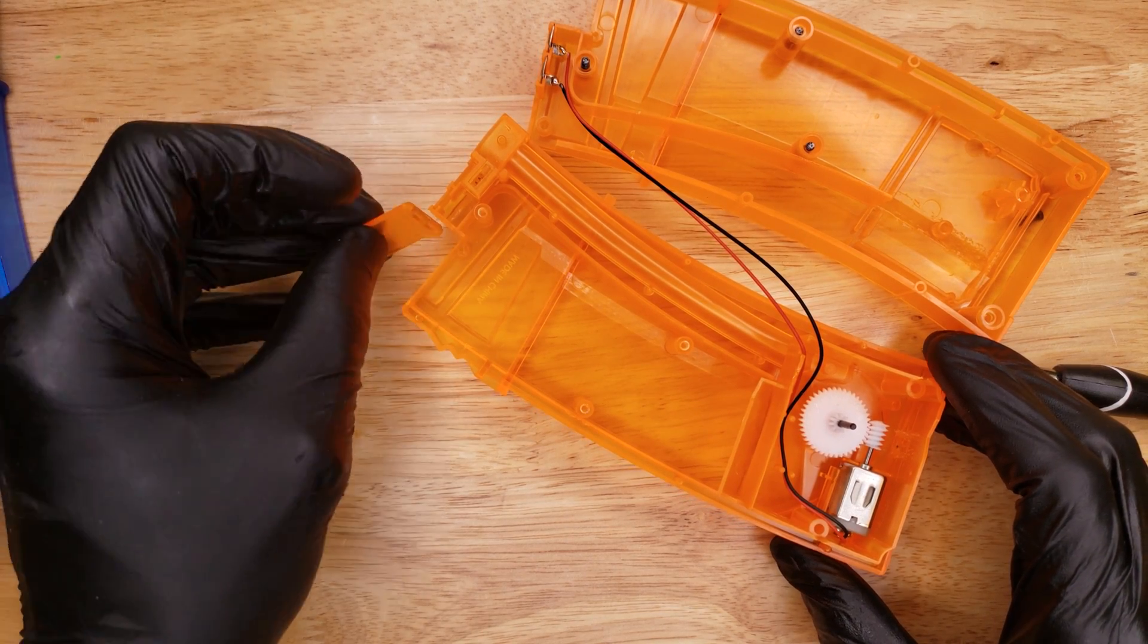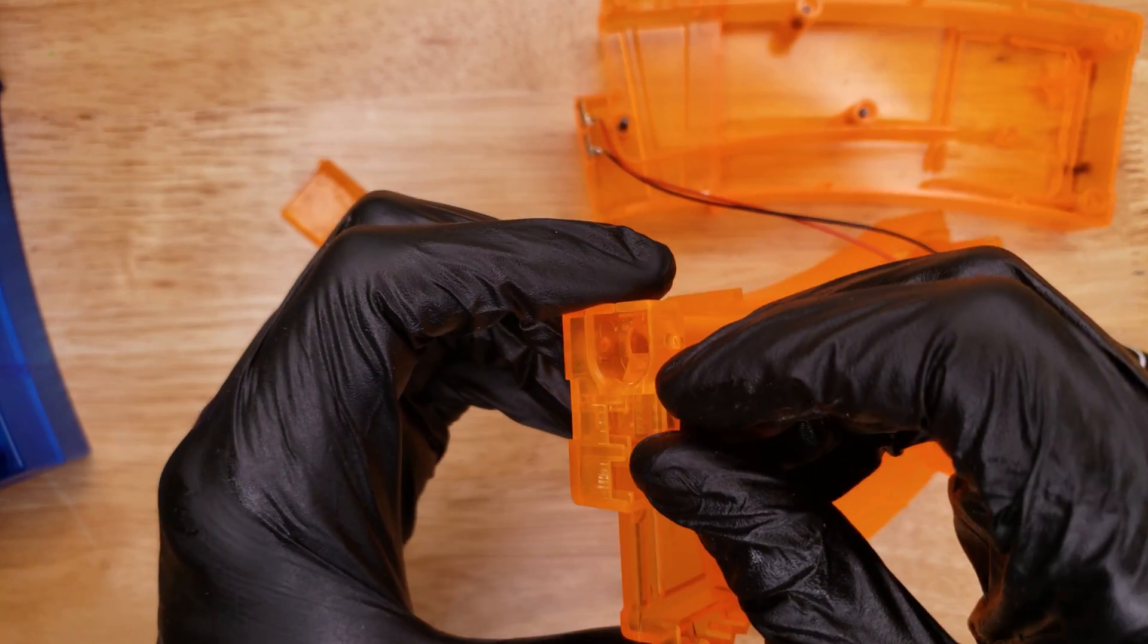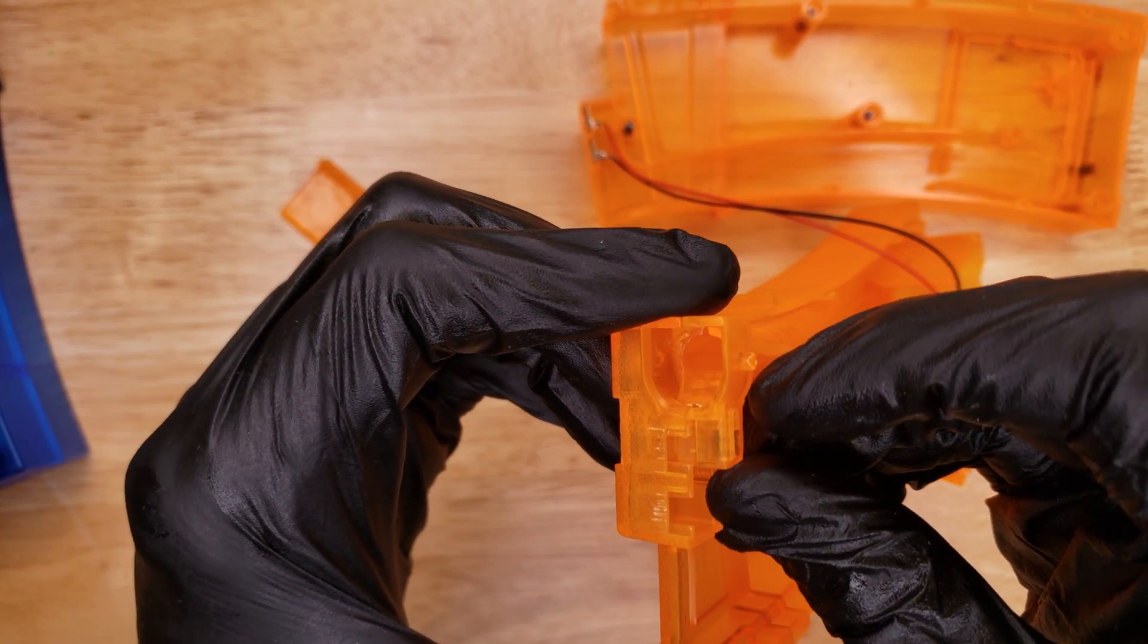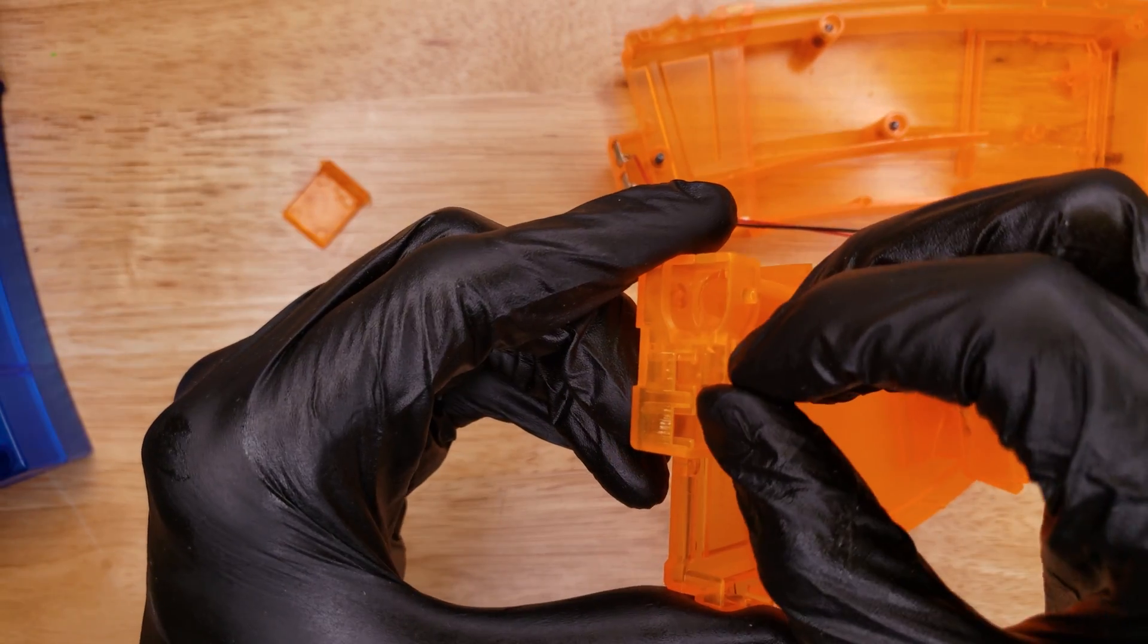There's a flap up here, a little trap door that fell off. There's a spring-loaded mechanism up here that prevents the gel balls from falling out inadvertently when it's not loaded into the blaster.